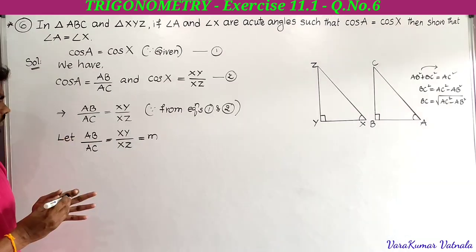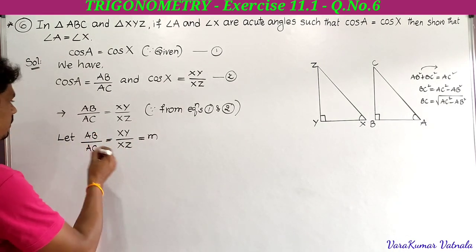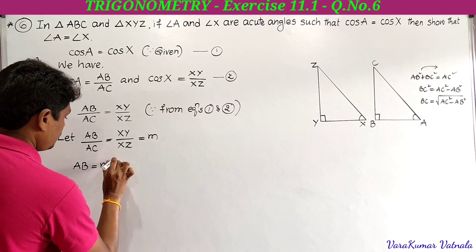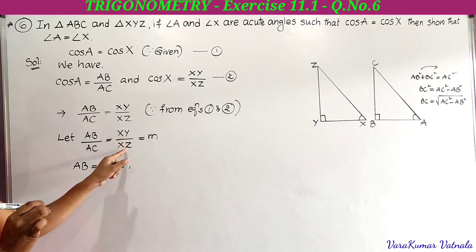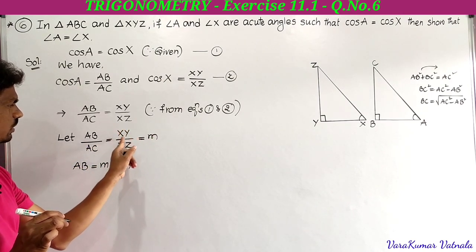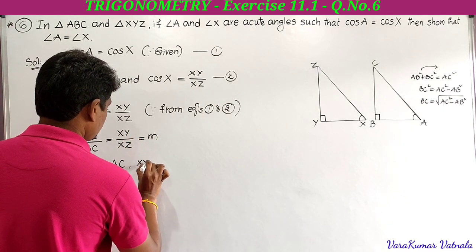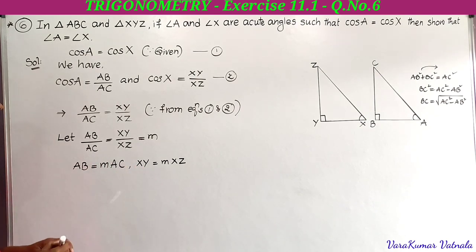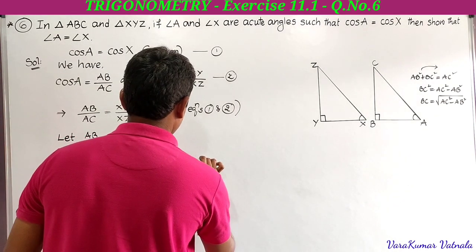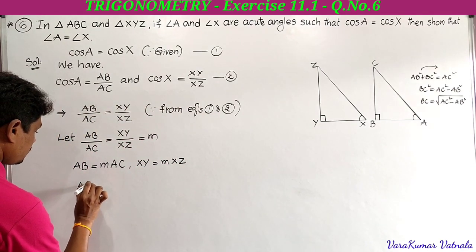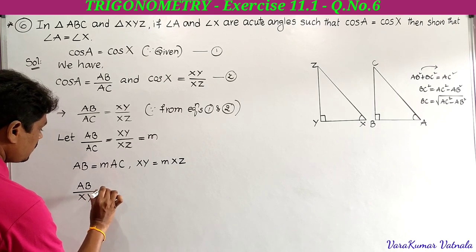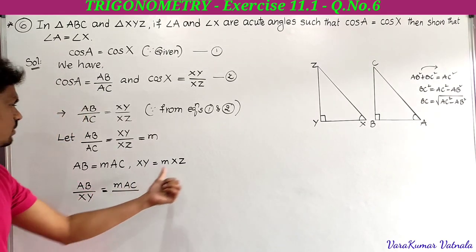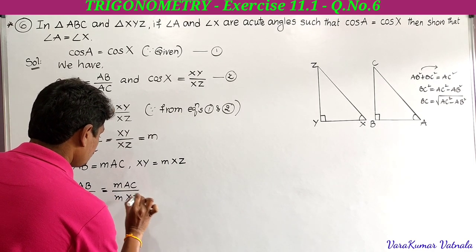Let AB by AC equals XY by XZ equals m (constant). Taking AC to the right side, AB equals m times AC. Similarly, XY equals m times XZ. Now finding the ratio of AB and XY: AB divided by XY equals m times AC divided by m times XZ. M cancels, giving AC by XZ (equation 3).